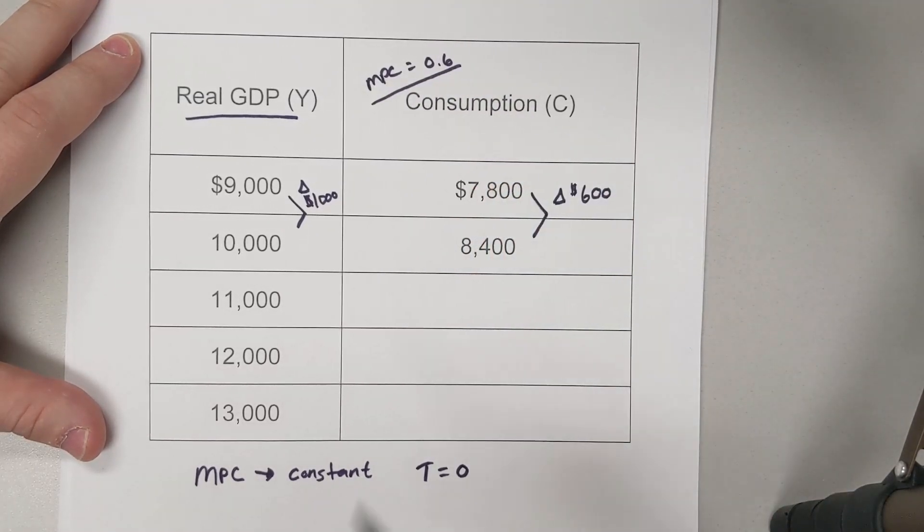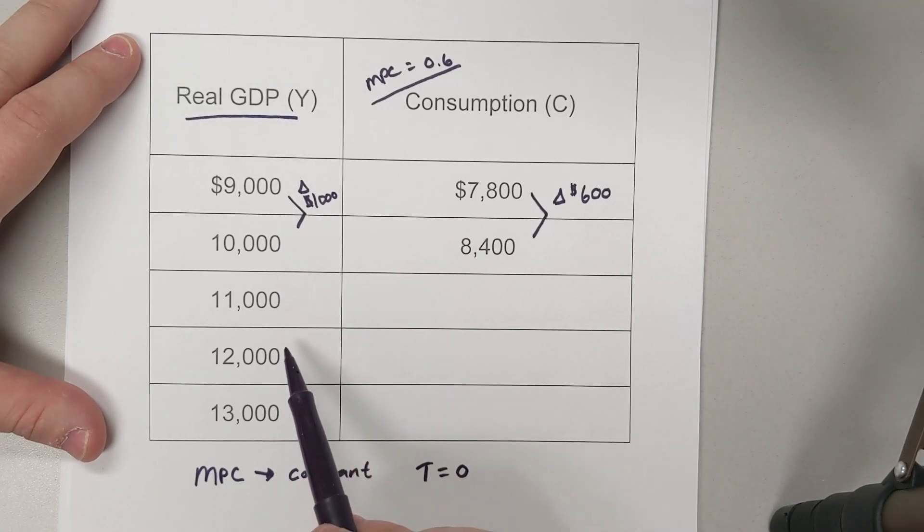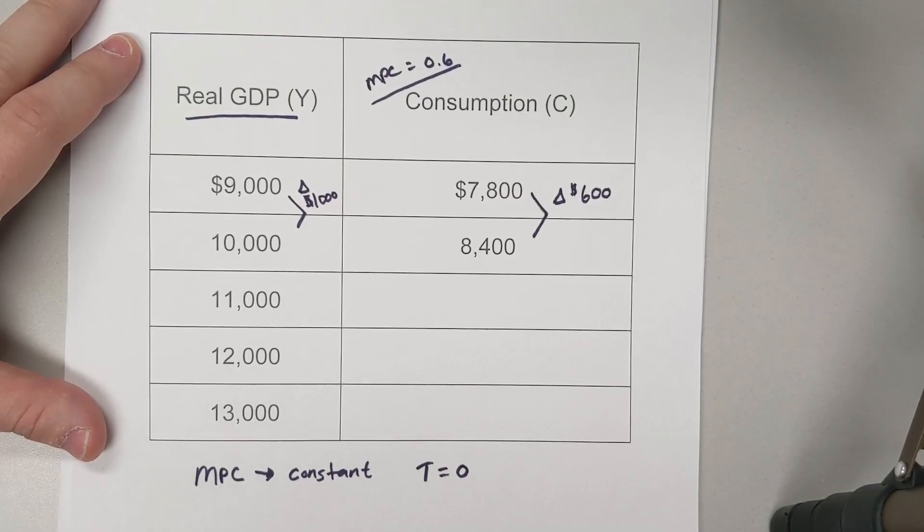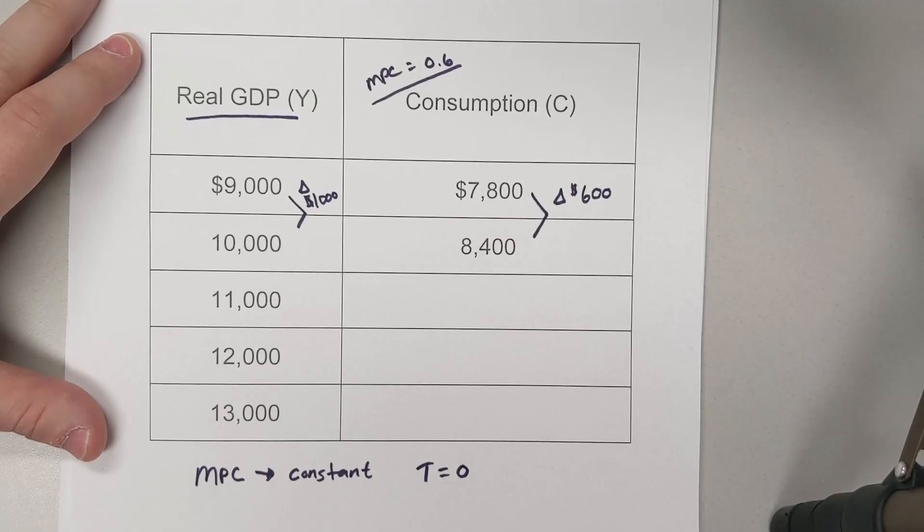That's important to know because in this example, we're given an easy one where the changes are $1,000, $1,000, $1,000, $1,000. But maybe your change in real GDP isn't the same every single time, so you might need to calculate what the MPC is. In this case, it's 0.6.